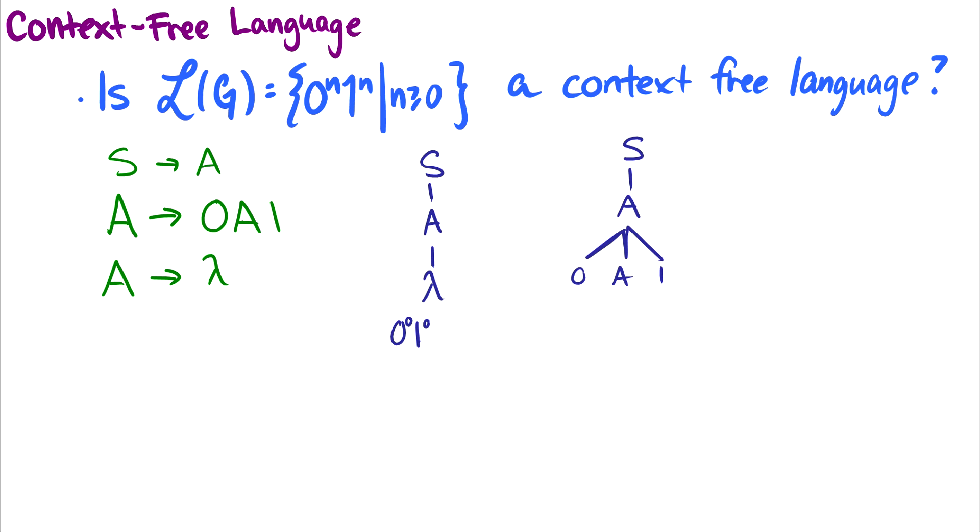But we can keep going. We can just take this A and keep splitting it into ternary branches: 0, A, 1, 0, A, 1, and then stop. So now this is 0^3 1^3.